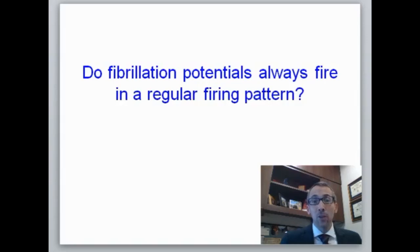Fibrillation potentials are common waveforms recorded during needle EMG. They are the most common abnormal spontaneous waveform and occur due to the action potential of individual muscle fibers firing in the absence of innervation. They are derived from a denervated muscle fiber.